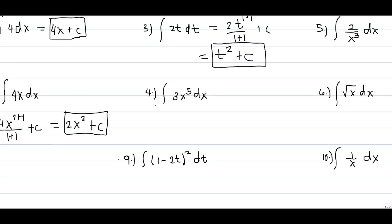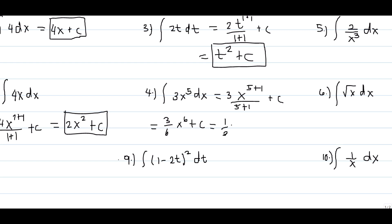Another example: the integral of 3x to the power 5 dx. This equals 3x to the power 5 plus 1 over 5 plus 1, then plus c. Simplifying gives 3 over 6 times x to the power 6, then plus c, or one-half x to the power 6 plus c.